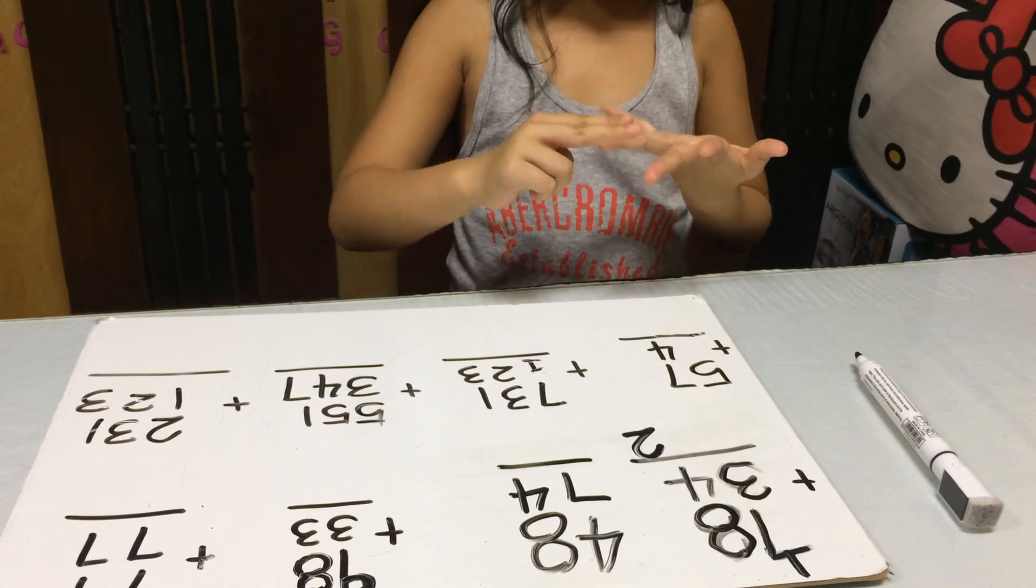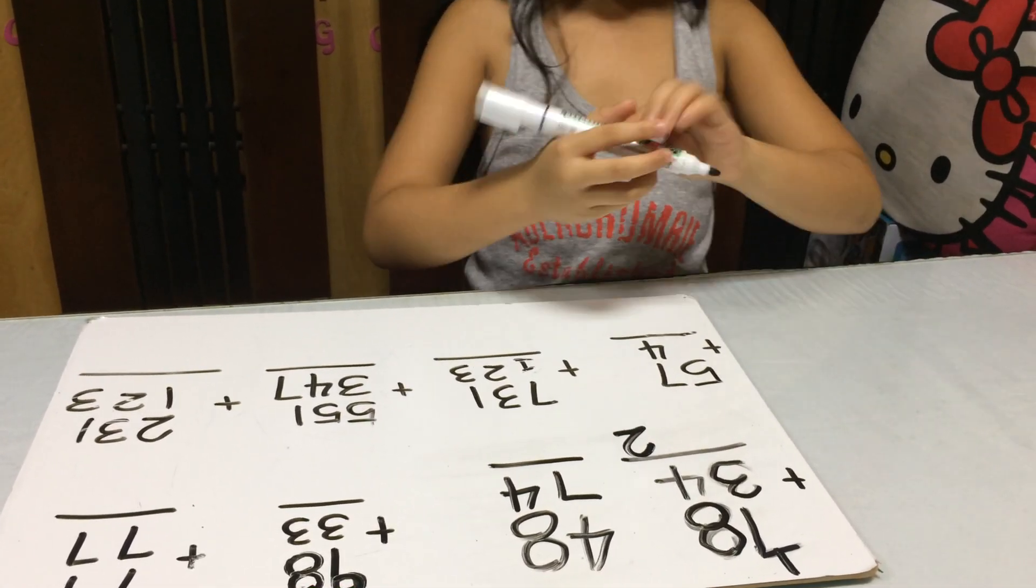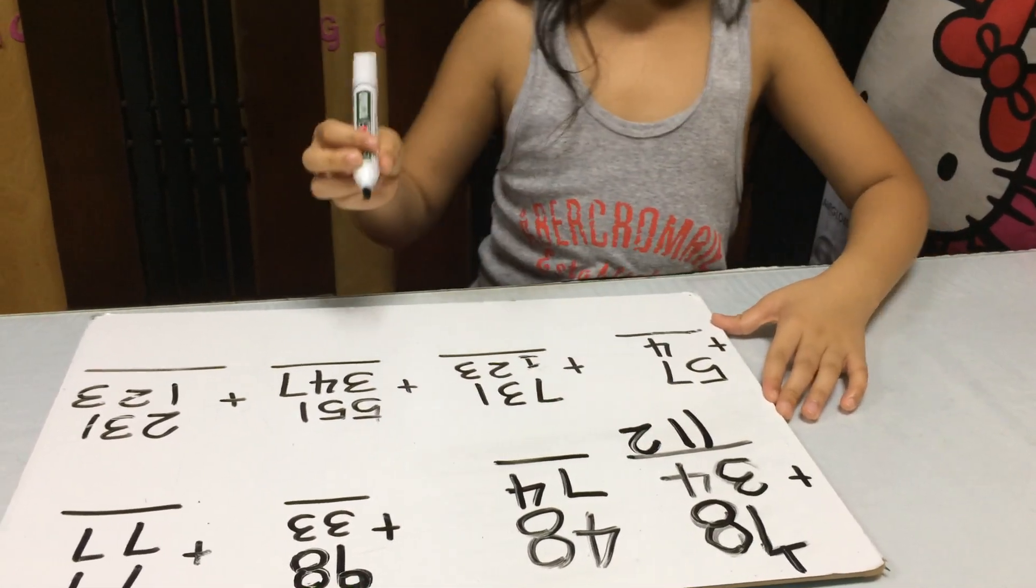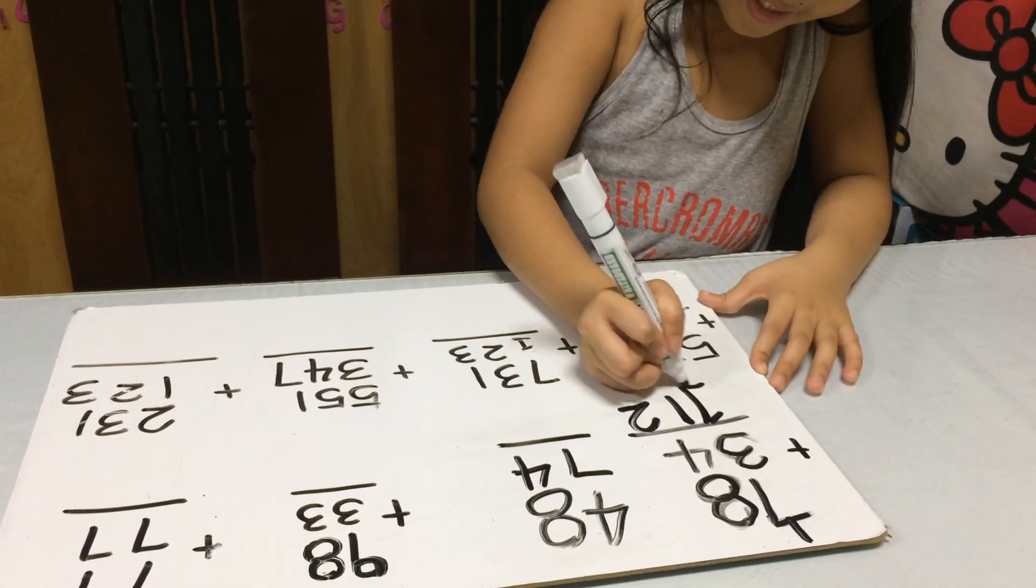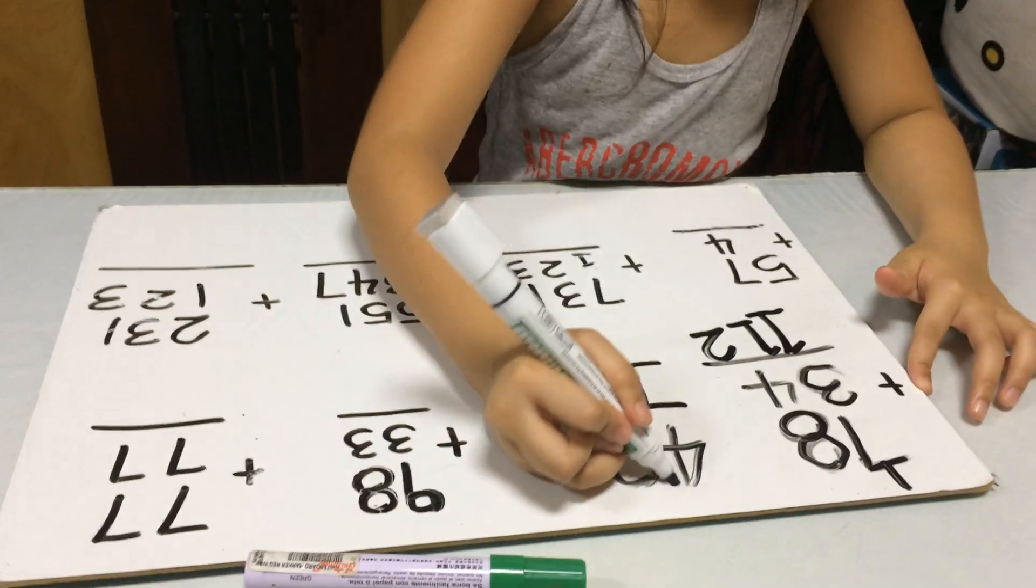7, 8, 9, 10, 11. Put the 1, 1. Okay, wait. I will just put it like that. There you go. Next.